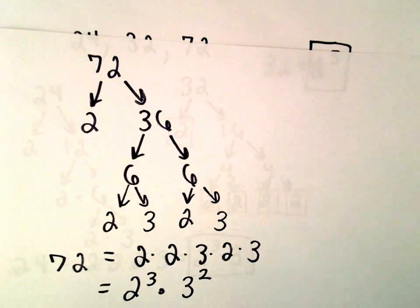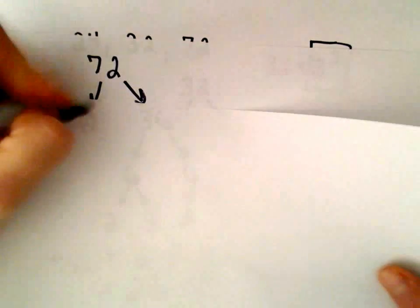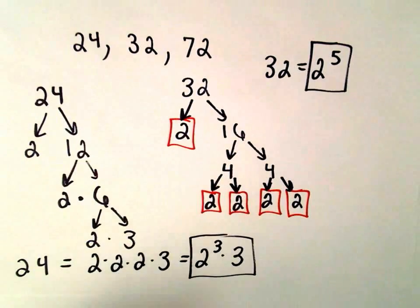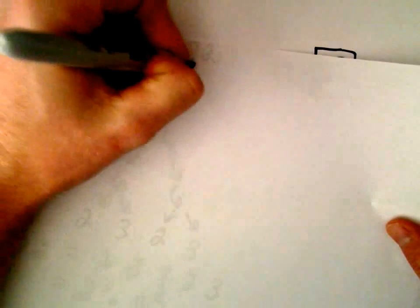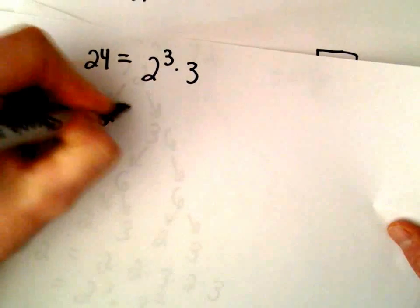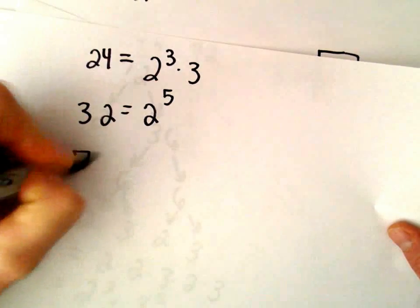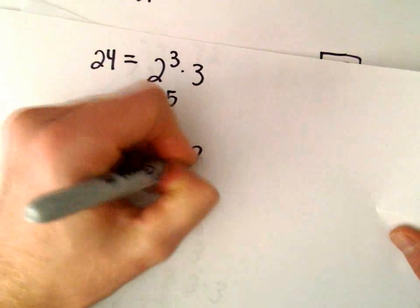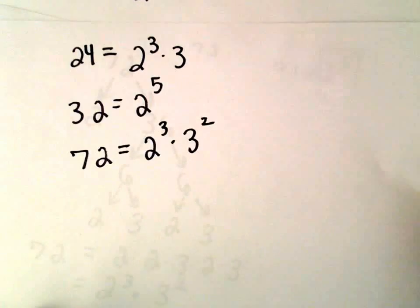Let's summarize here. We said that 24 was 2 to the third times 3. We had 32, which was 2 to the fifth power. And we had 72, which was 2 to the third times 3 squared.